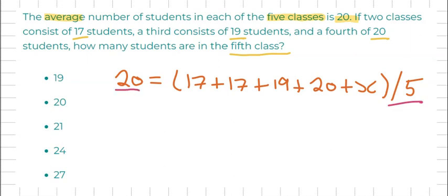So 20 times five is going to give us the answer of 100, and that's going to equal all of these five numbers.